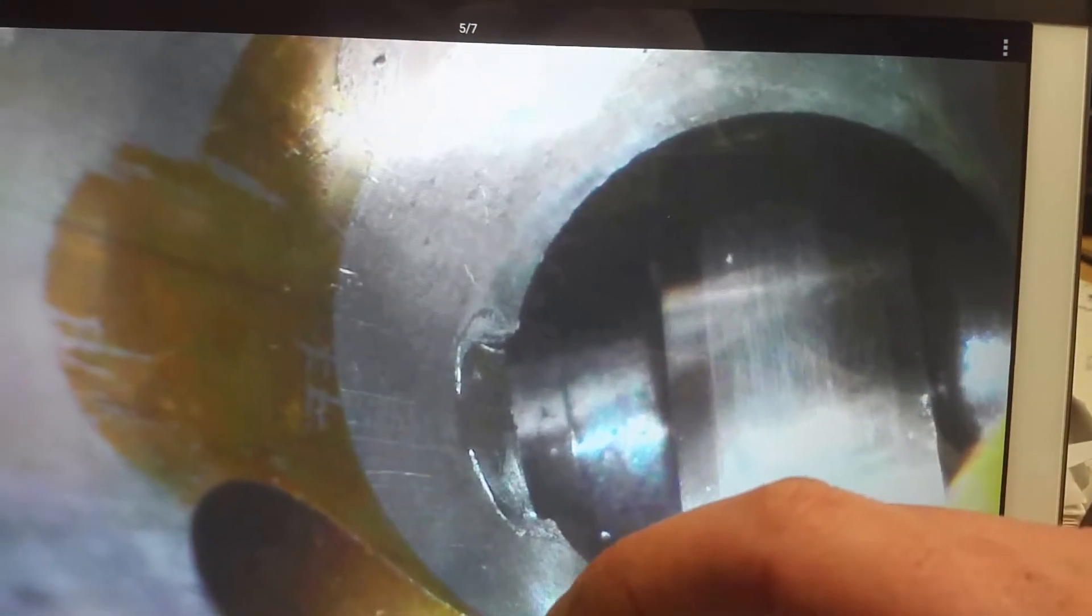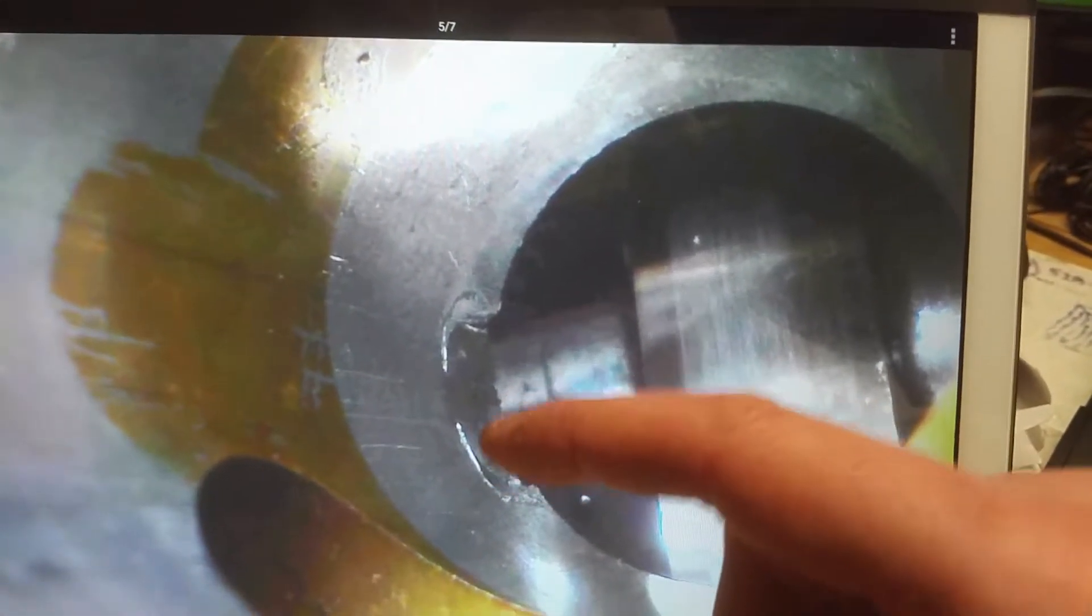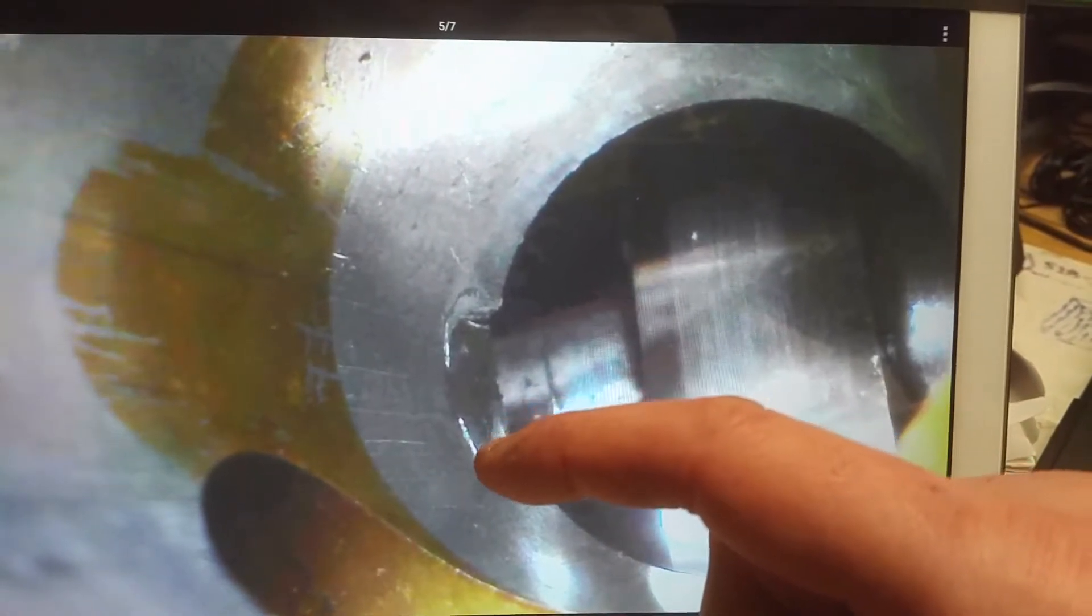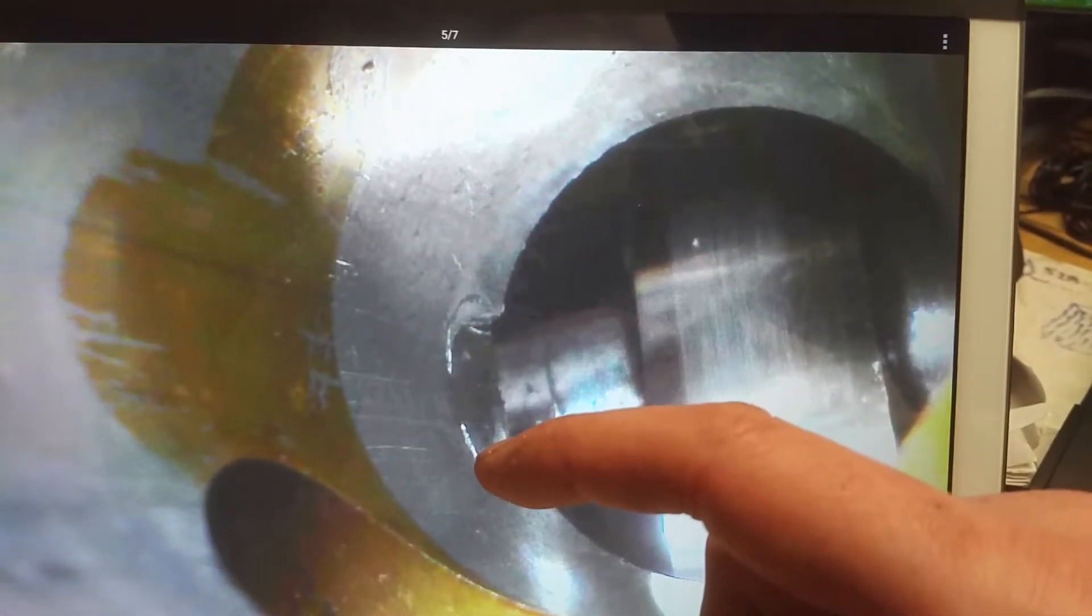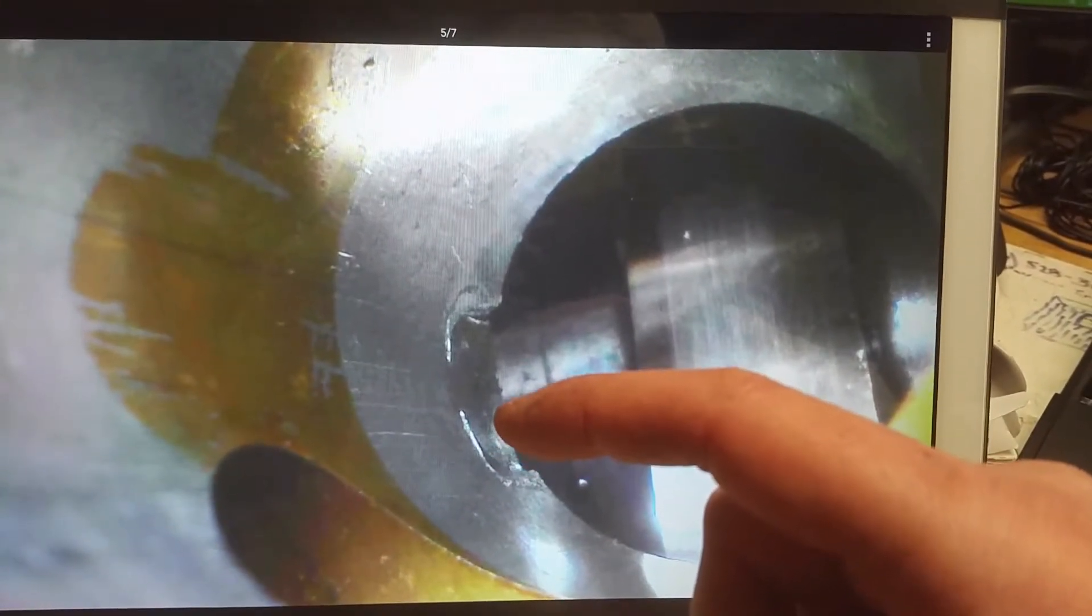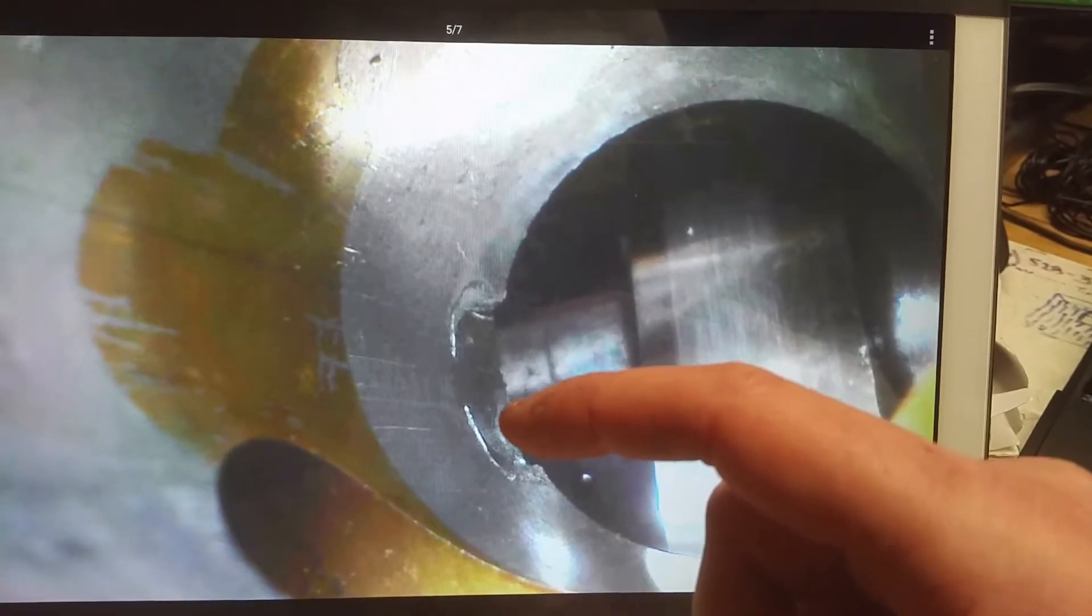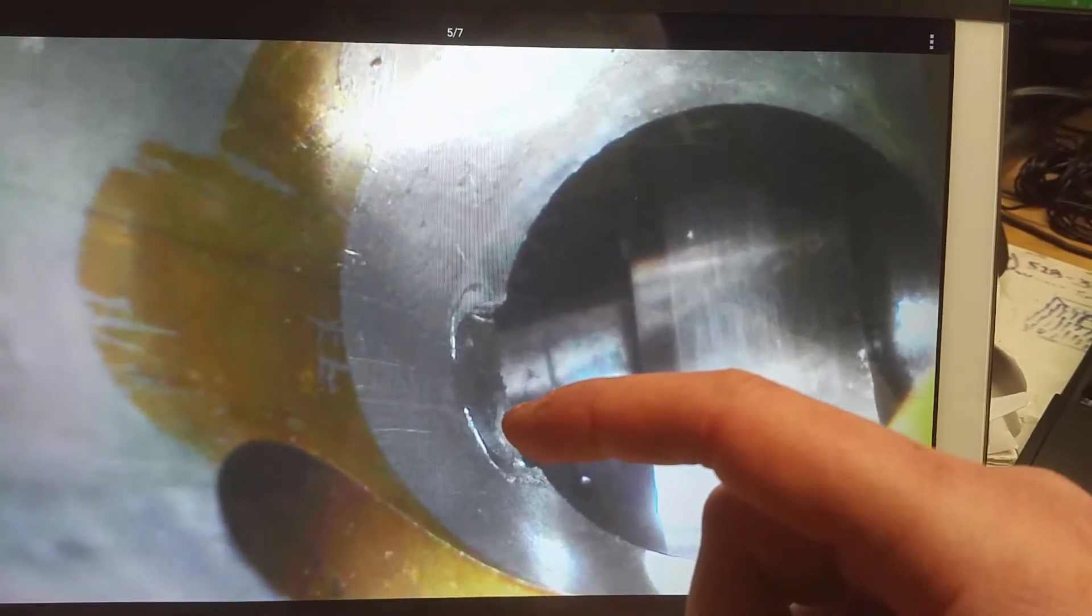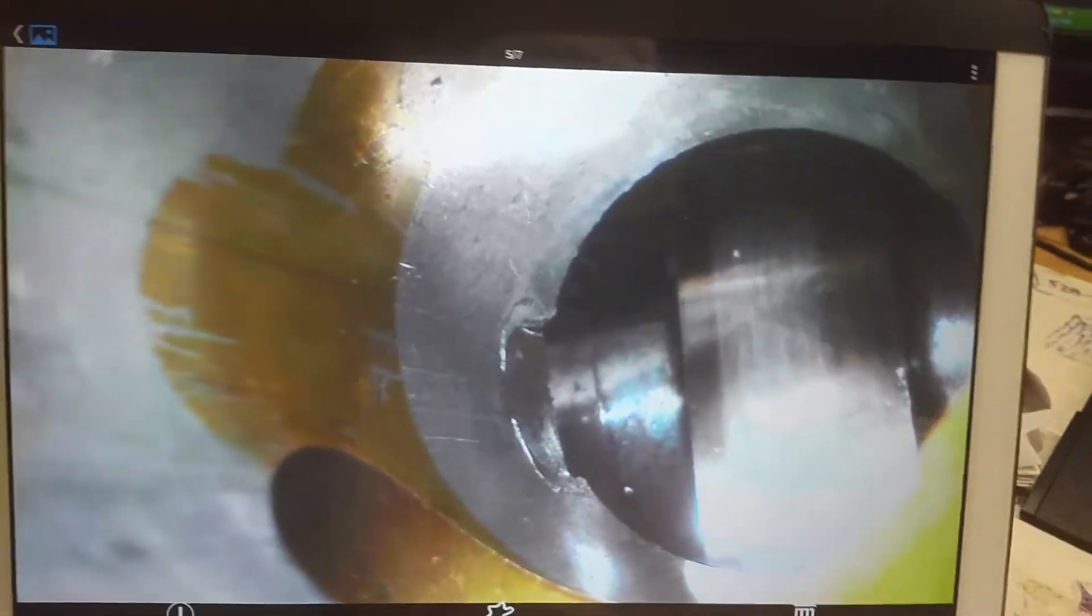We'll find out. The worst case is we have to send the block to the machine shop so they can re-hone the lifter bores. To take the engine out, take it apart, get it to a machine shop, it might be a thousand bucks. The block itself is $2,100, maybe $1,700. That's very disappointing, and that's where I'm at. Let's go back to the video.